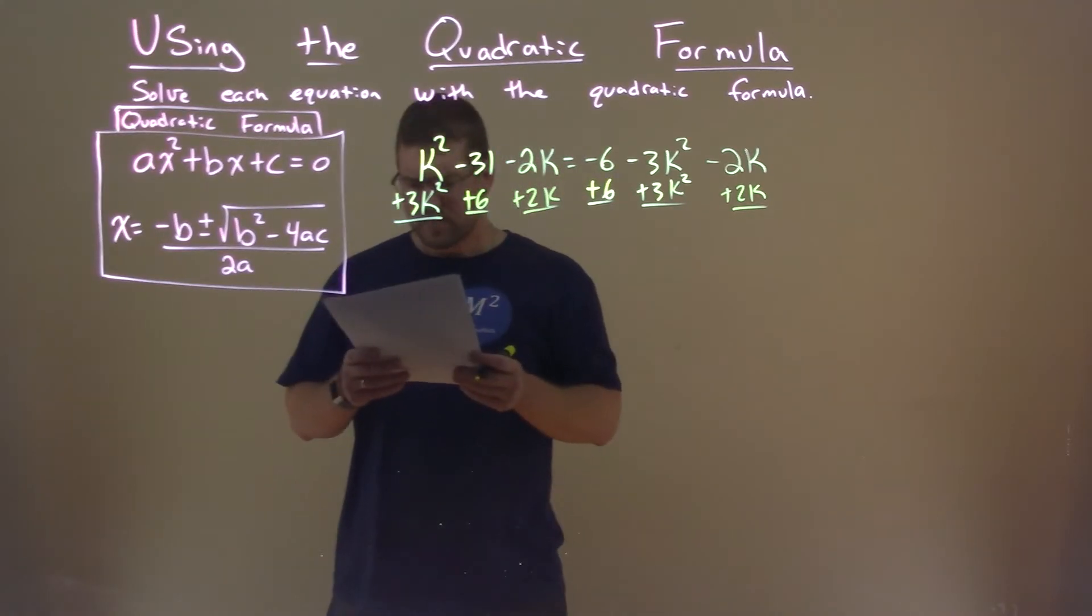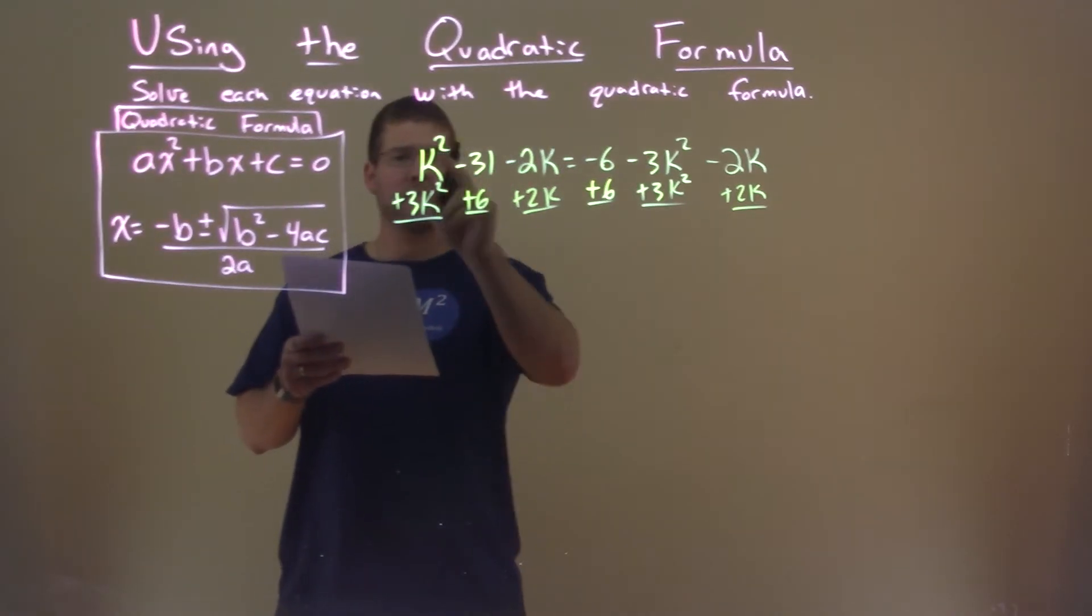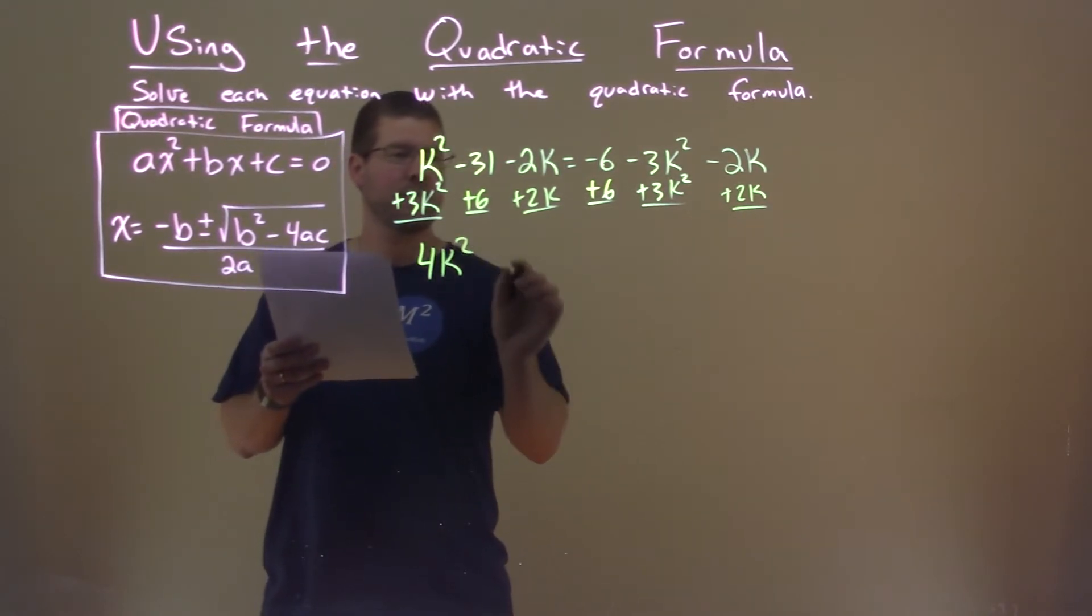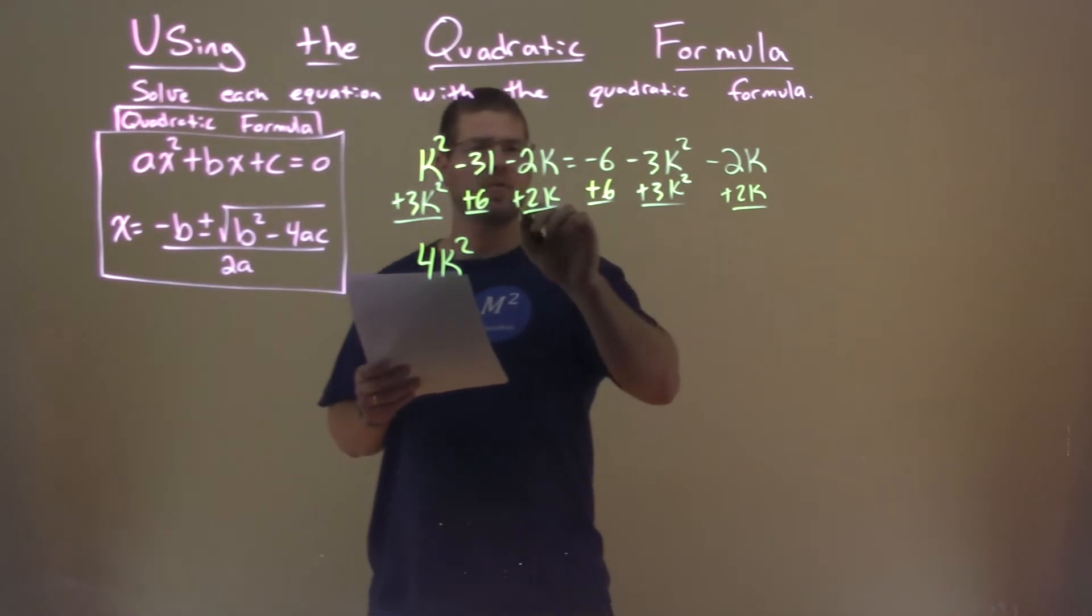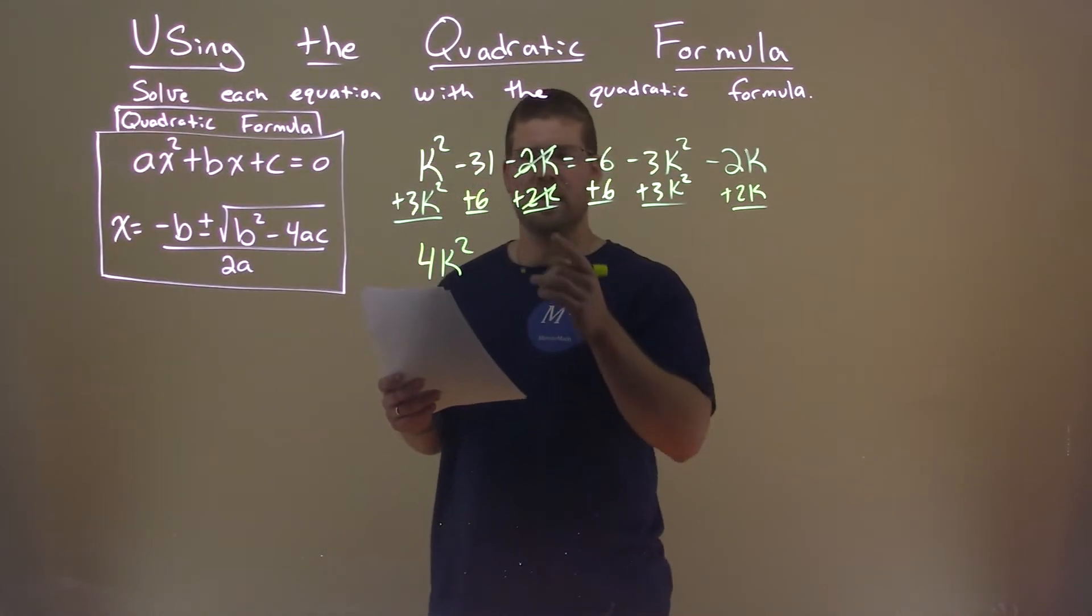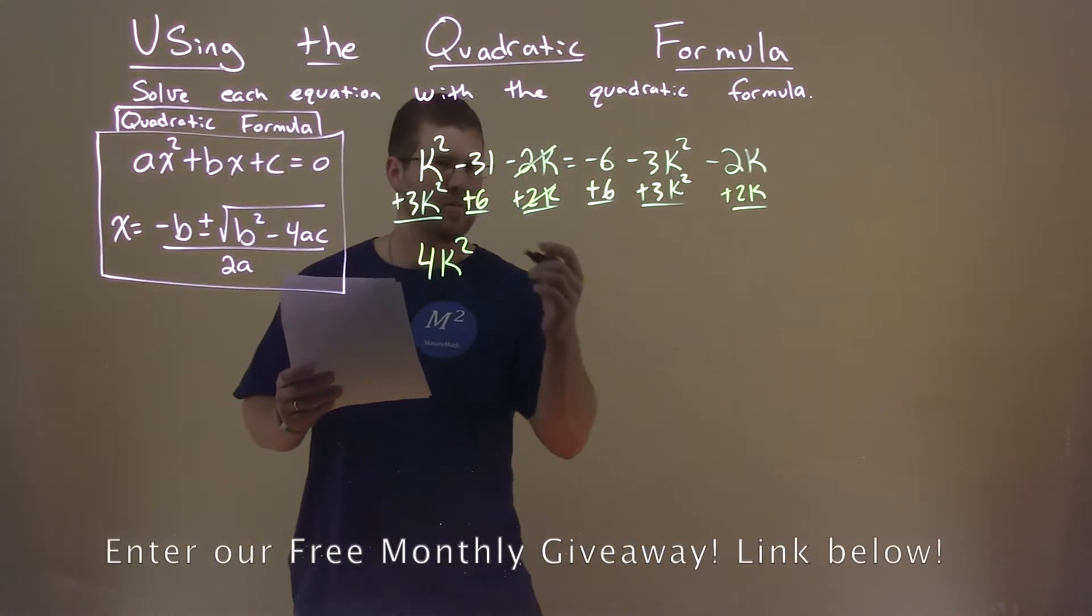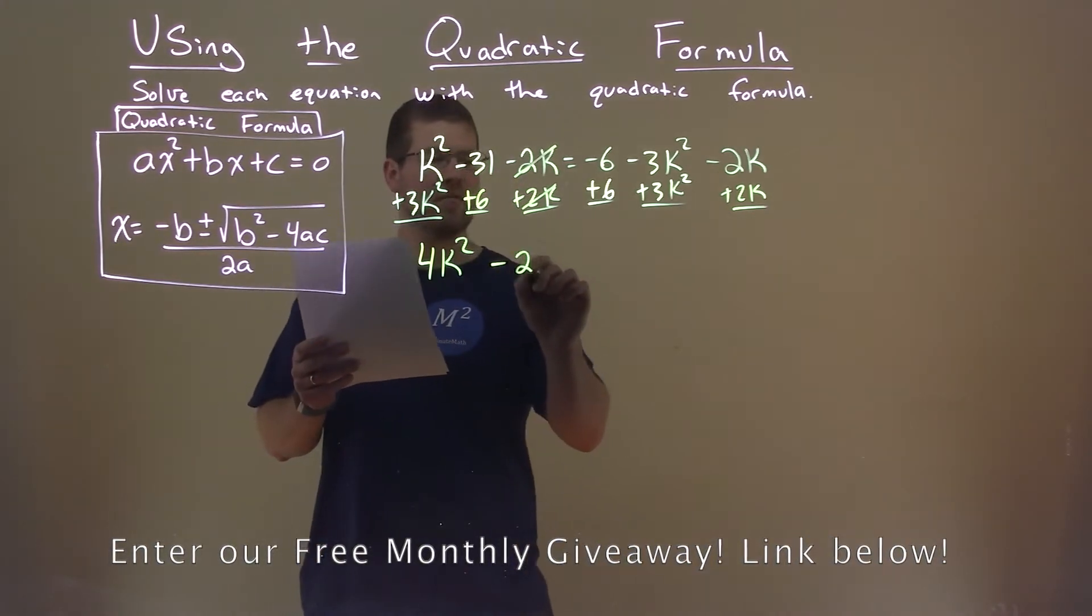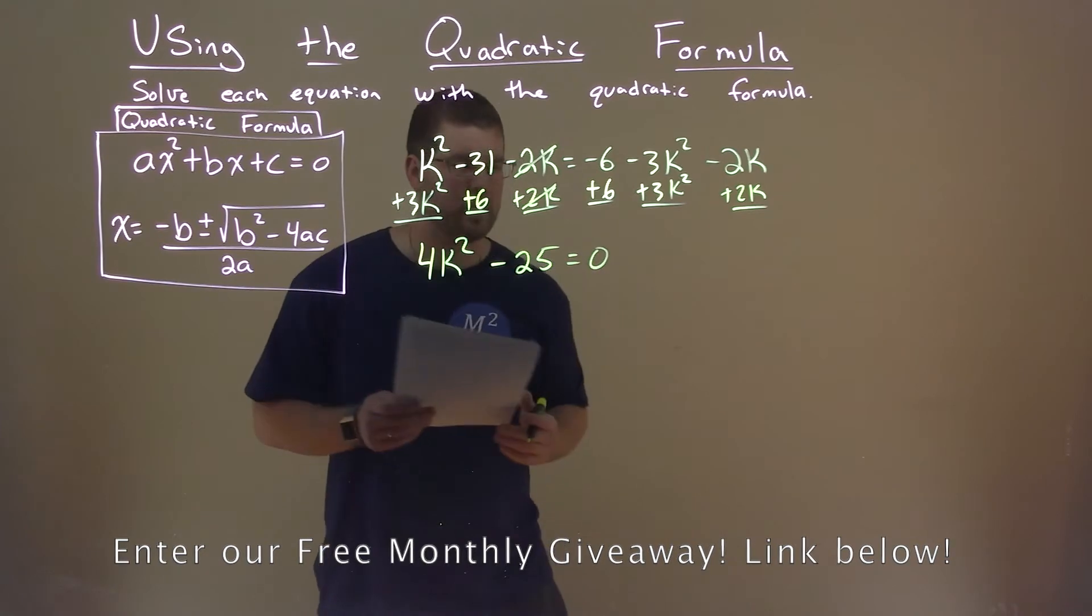So what are we left with? Well, k squared plus 3k squared is a 4k squared. And then the 2k is actually canceled here. Negative 2k and 2k cancel. And negative 31 plus 6 is a negative 25. That equals 0.